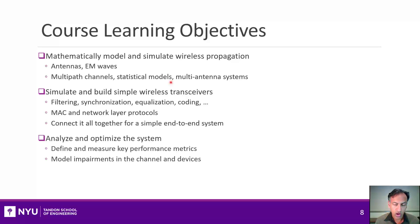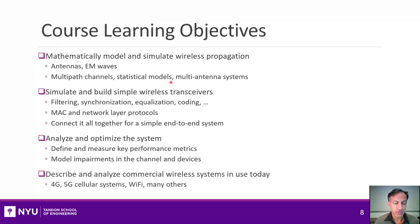Building on the challenges discussed earlier, I want you to gain the tools to mathematically define, measure wireless performance, and model the key impairments seen in wireless devices. Finally, I want to give you many examples of real commercial systems in use today. My own background is largely in the cellular space, so I'll draw on that — giving examples of 4G systems, evolving 5G, and maybe some research directions in 6G, Wi-Fi, and other areas.